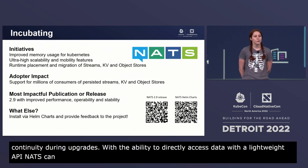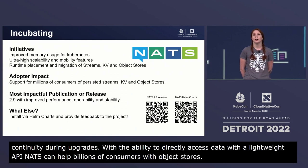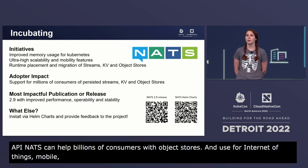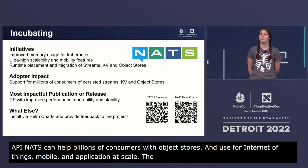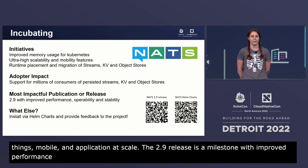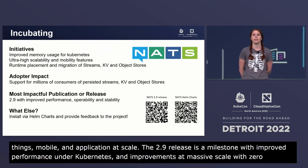With the ability to directly access data with a lightweight API, NATS can support millions of consumers of persisted streams, KV, and object stores — useful for IoT, mobile, and any type of application at scale. The 2.9 release is a milestone with improved performance under Kubernetes, greater scale, mobility, and improved stability towards operation at massive scale with zero downtime. The project is asking folks to try installing via Helm charts and would love your feedback.